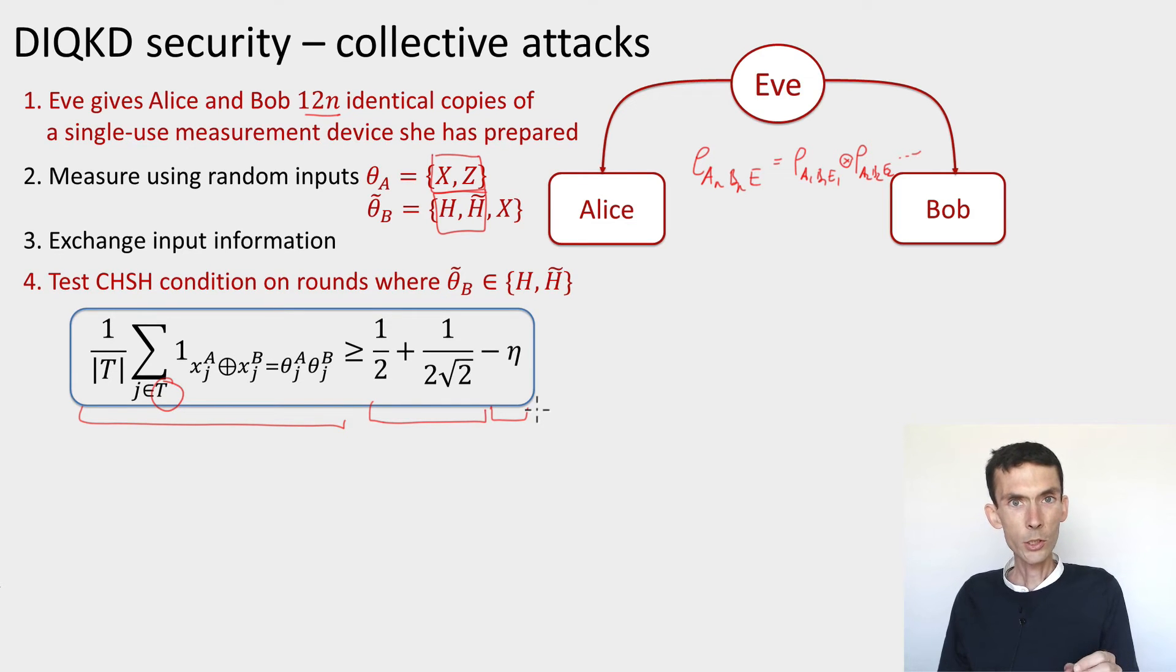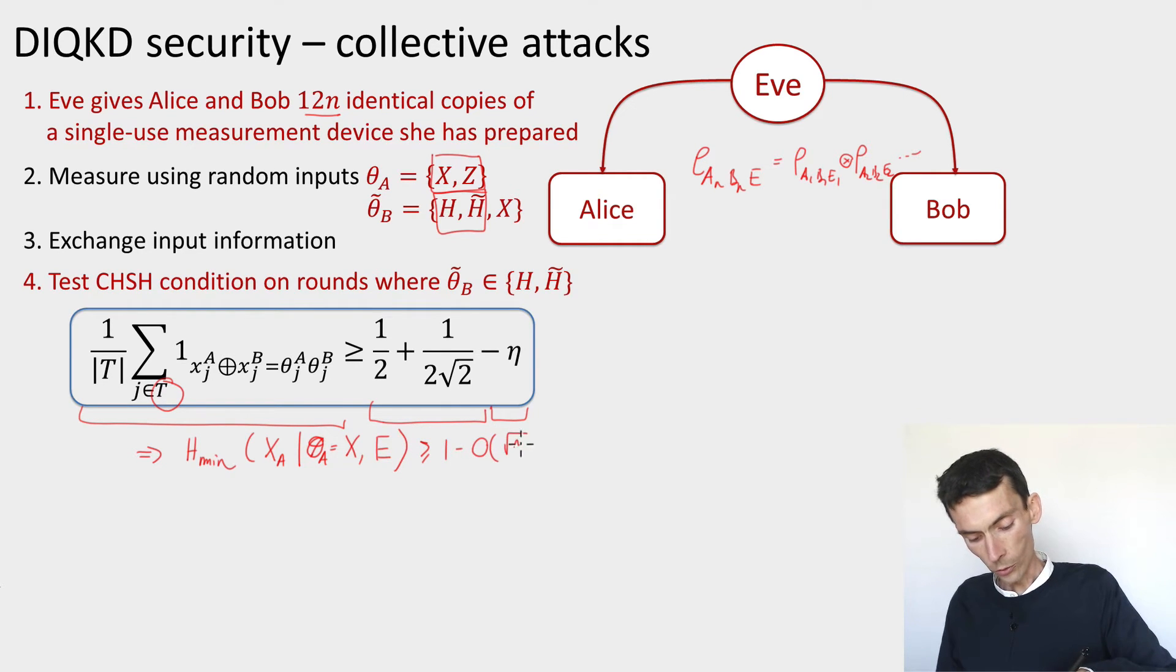That's the CHSH test. From this CHSH test, we can conclude, because we're using the same device independently each time, this device's probability of satisfying the CHSH condition was exactly this. From the analysis of the CHSH-based guessing game that we saw, we can conclude that this device produces outputs x on Alice's side such that conditioned on the basis theta_a being equal to the x basis and the eavesdropper's side information, this min entropy is large, it's pretty close to 1. It's 1 minus some dependency on this error parameter eta.